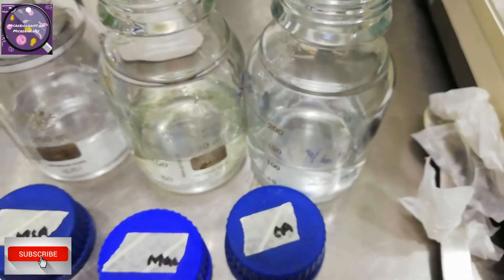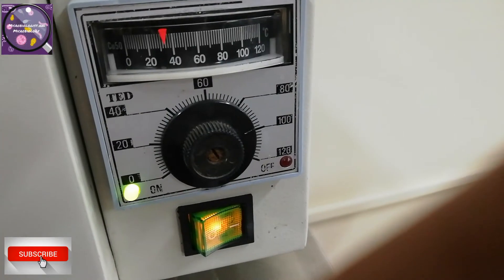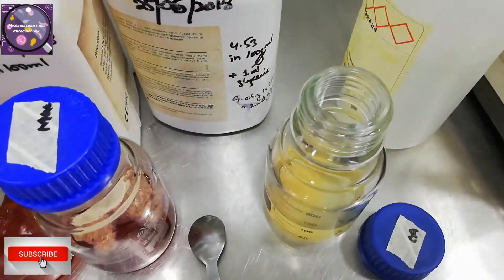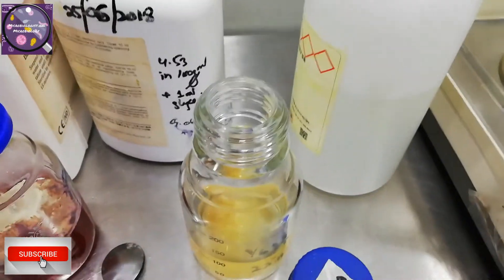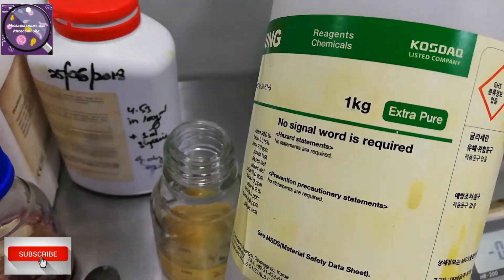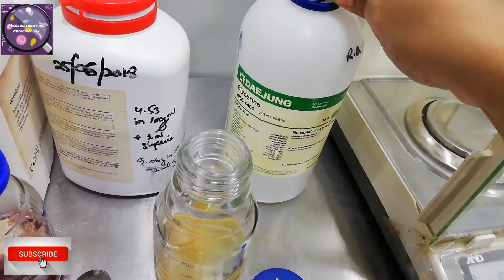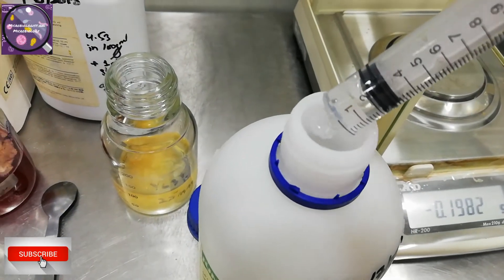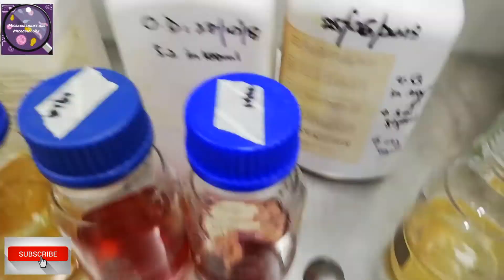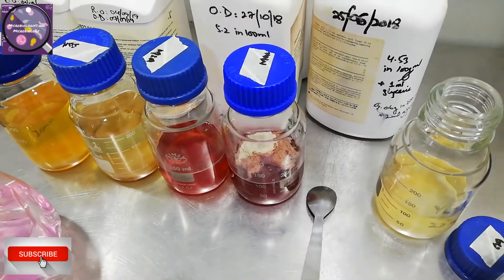In between I have turned on the water bath and by the time my work is done it will reach the selected 100 degrees centigrade. All the media have been weighed and I will add 1ml glycerin now to the cetrimide agar as per the description. This is my reagent bottle, glycerin and glycerol are the same, don't be confused between them. Now I am measuring 1ml through sterile syringe and adding 1ml to the cetrimide agar.